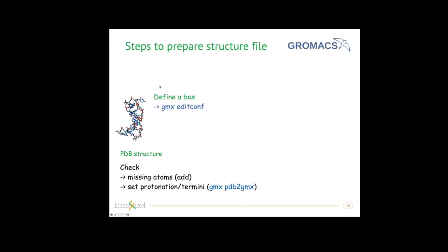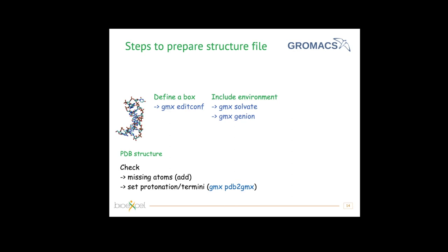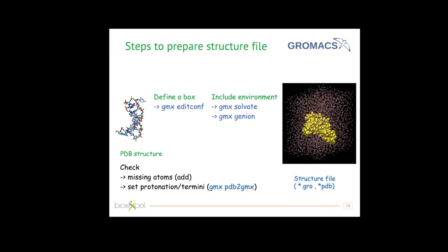Once the box is defined, we run editconf to place the macromolecule in the box, then use gmxsolvate to solvate it with a solvent box, and genion to add ions. Ions are randomly placed by replacing water molecules. We add ions both to achieve the correct ion concentration and to neutralize the system. At the end we have a nice box with our macromolecule, solvent, and a neutralized system at the correct ion concentration. This is our structure file, which can be in GRO or PDB format.